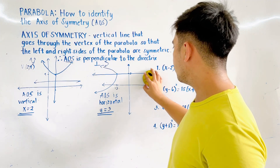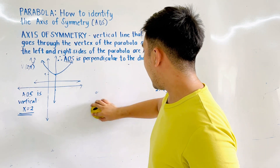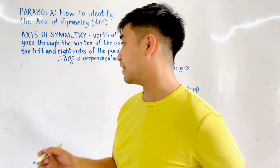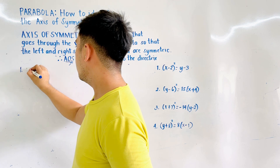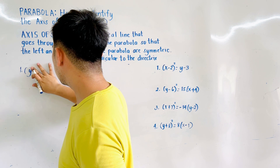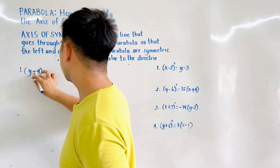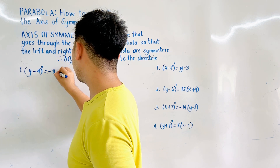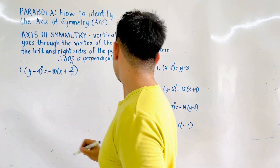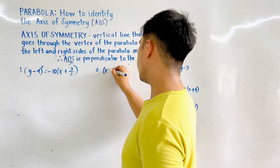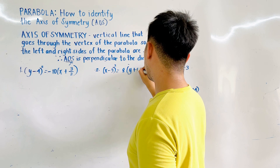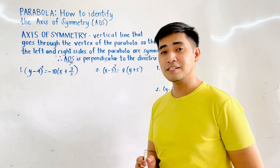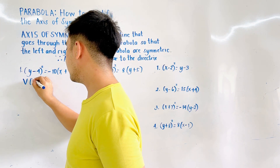Let's now have an example so that we'll be able to answer it properly. What if we're given a standard form and we're asked to identify the axis of symmetry? Before we determine the axis of symmetry, let us first identify the vertex, which is located at (h, k).